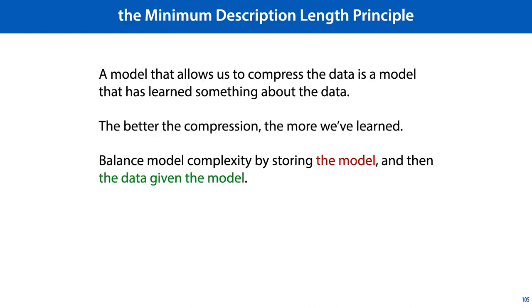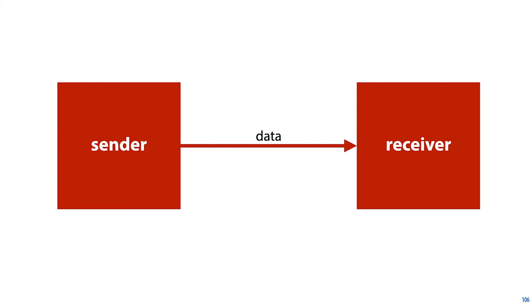We will finish up with a brief look at the minimum description length principle. This is a general philosophy that can often be helpful in designing machine learning models. The general idea behind the minimum description length principle is that a model that allows us to compress the data is a model that has learned something about the data. The better the compression, the more we've learned. And if we represent the data by storing first the model and then the data given the model, that gives us a really good way to balance our model complexity.